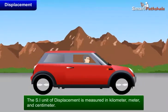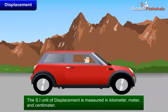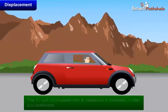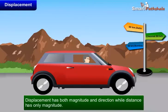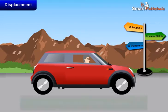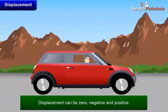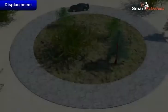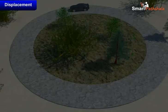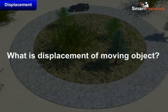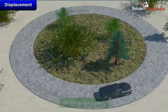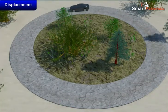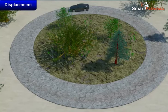The SI unit of displacement is measured in km, m, and cm. Displacement has both magnitude and direction, while distance has only magnitude. Displacement can be zero, negative, or positive. Suppose when a moving body makes a round trip and returns to its initial position, what is the displacement? Displacement is zero because the initial position and the final position are the same.